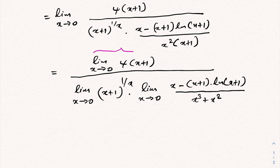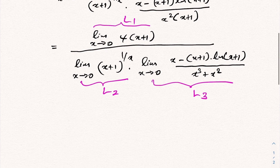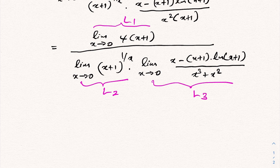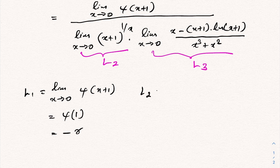We need to evaluate three limits. L1 is the limit as x approaches 0 of digamma of x plus 1. When x approaches 0, we have digamma of 1, which equals minus gamma, where gamma is the Euler–Mascheroni constant.